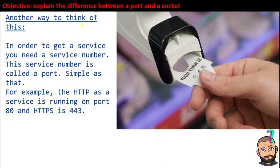Another way to think of a port: when you get to a computer in order to get a service, you need a service number, and that service number is called the port. If you're browsing the web, you're initially going to use HTTP or HTTPS — the S is for security, so that's the better one to use. When you're using HTTPS, you're beginning communication on port 443. I just imagine those ticket counters at the DMV, where you grab a ticket so you know when your turn is.